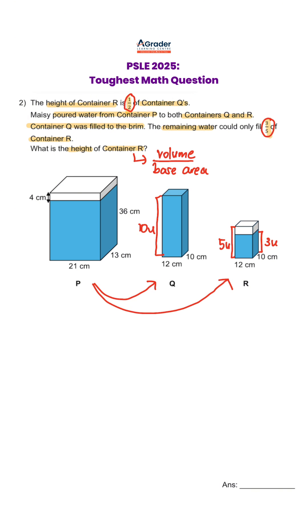Let's look at the total volume that is poured into container Q and R first. Total volume in P is 21 × 13 × (36 - 4), which gives us 8,736.